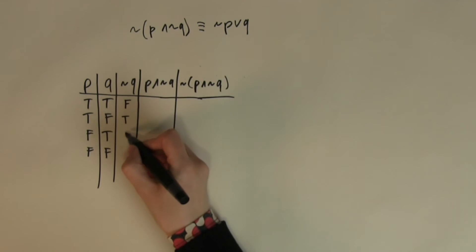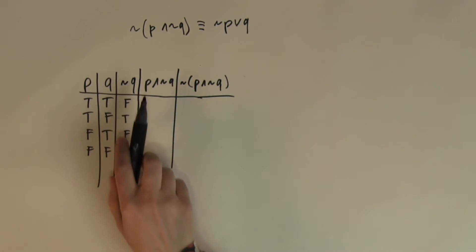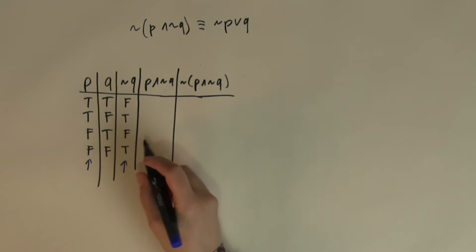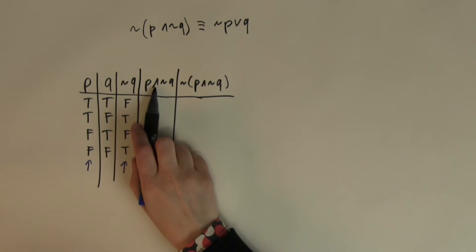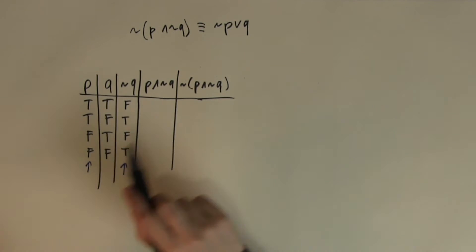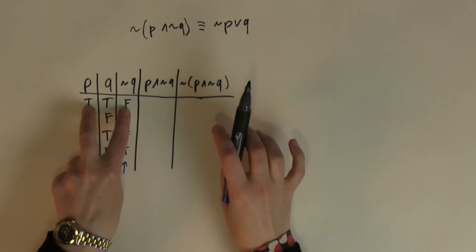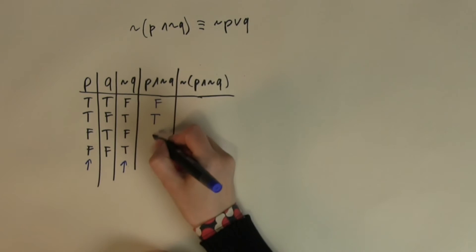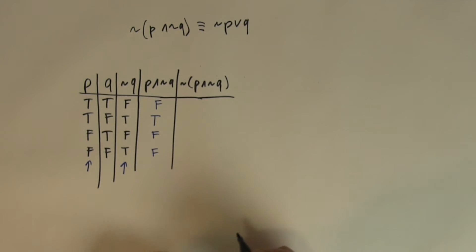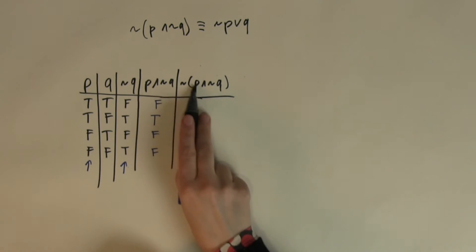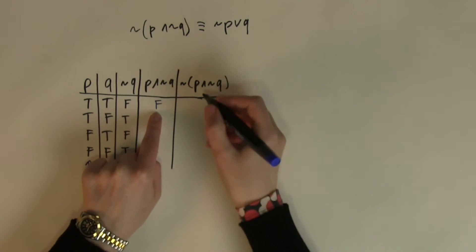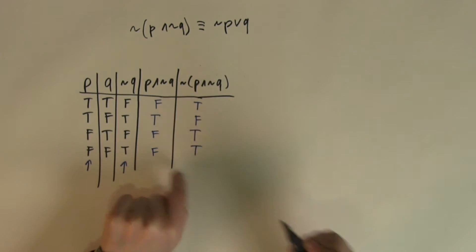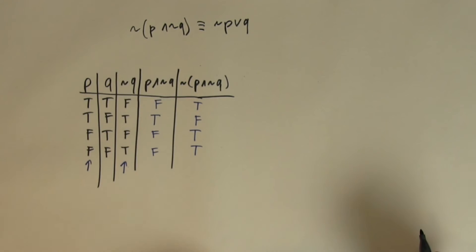So, ¬q just turns the values into their opposite. Then for p∧¬q, I need to use p and ¬q and combine them with the AND operation. Remember, AND is only true if both of them are true, which is only the first case. There are no other rows where both are true, so the rest give me false. Then the NOT in front of the whole operation just turns false into true and true into false. So this is what the left-hand side looks like.